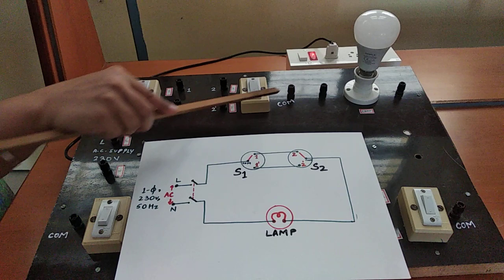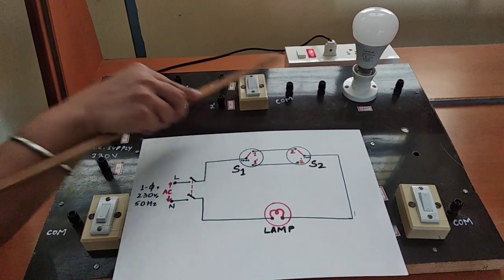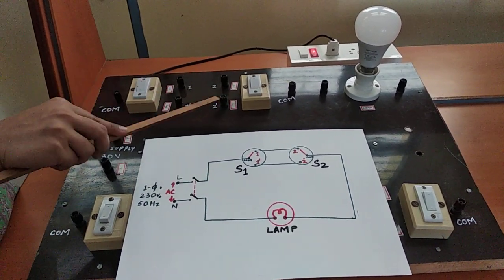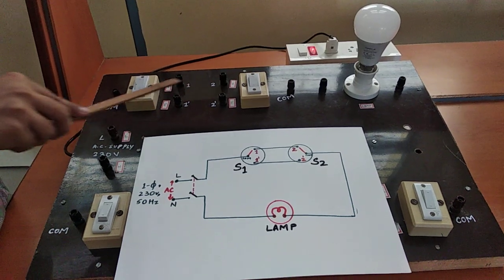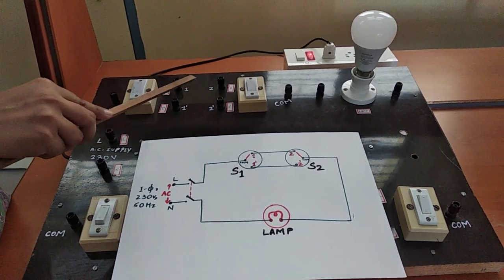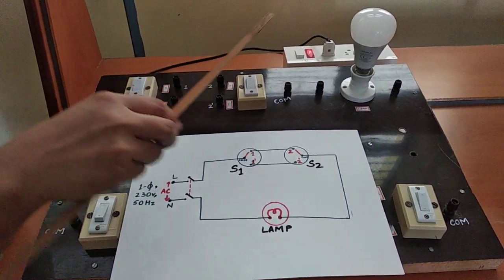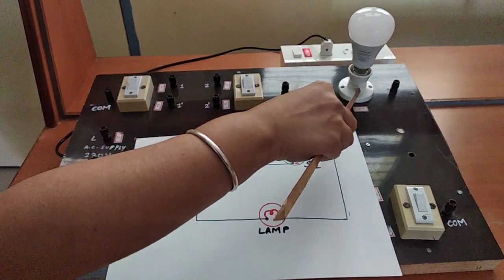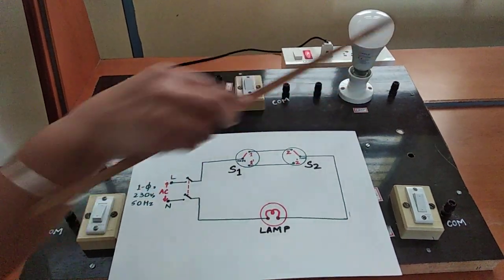Switch S2, similar to S1, has three terminals: common, 2, and 2 dash — indicated to show the difference between switch S1 and S2. And a lamp which has two terminals.